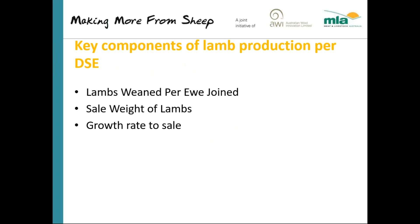Production per DSE — kilograms of lamb per DSE — is really just another way of saying how many kilograms of lamb do I produce per kilogram of grass harvested. There are three key drivers of kilograms of lamb produced per DSE: the number of lambs weaned per ewe joined, the sale weight of those lambs, and — less obvious — the growth rate to sale. This is one that is most often overlooked. Lots of people can tell you lambs weaned per ewe joined and sale weight, but when asked about growth rate to sale, they haven't considered it and have to go back and work it out.